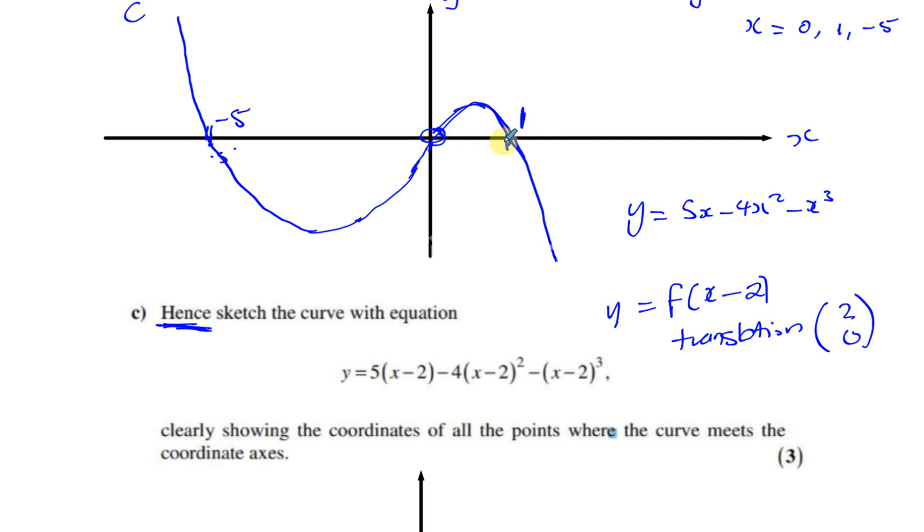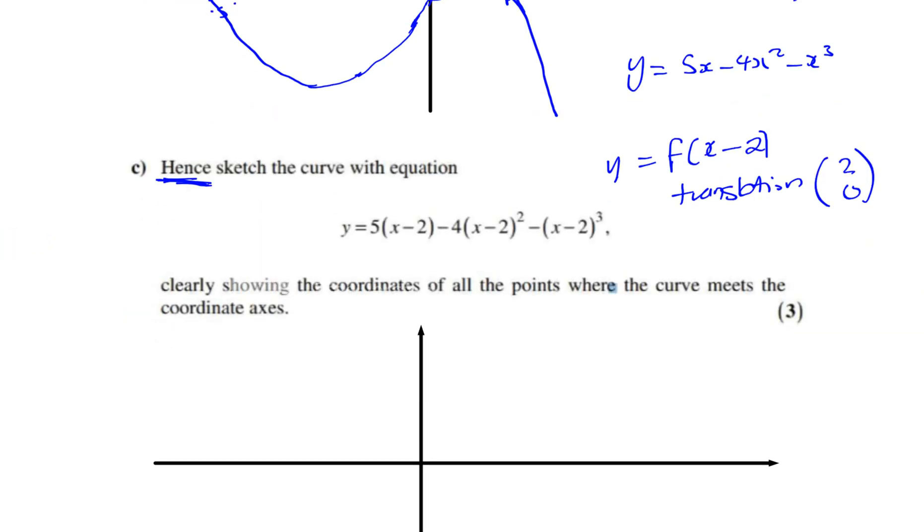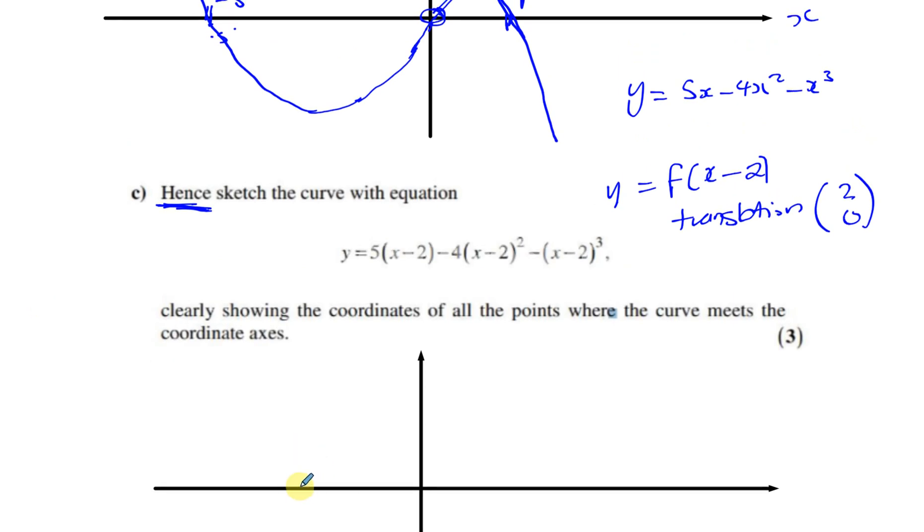So instead of crossing at minus 5, it now crosses at minus 3. Instead of crossing at 0, 0, it now crosses at 2, 0. And instead of crossing at 1, 0, it now crosses at 3, 0. So that's what's happened here. Everything's moved 2 spaces to the right. So basically, you've got the same shape of curve except it's going to come down like this instead.